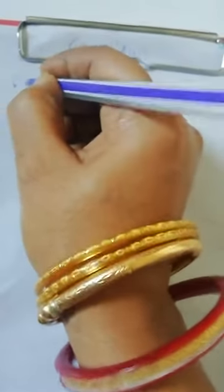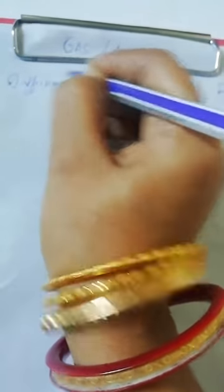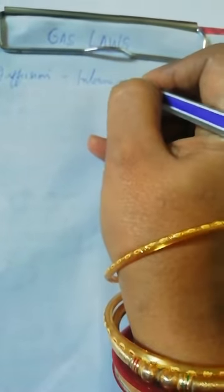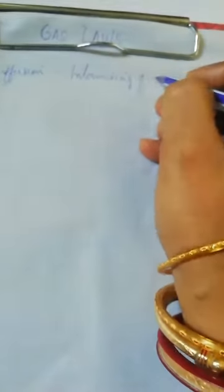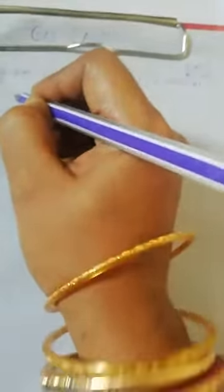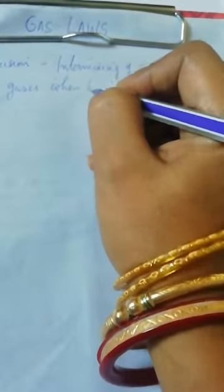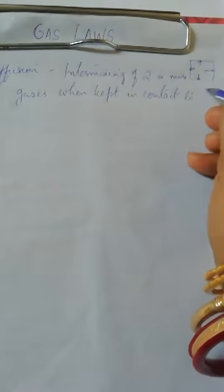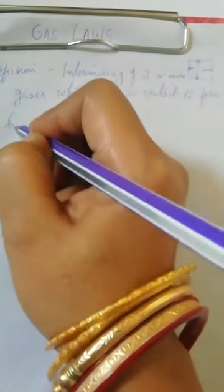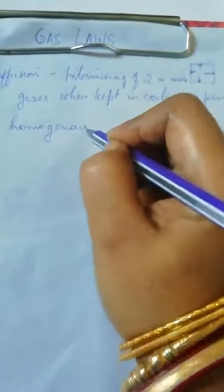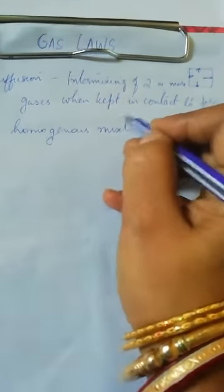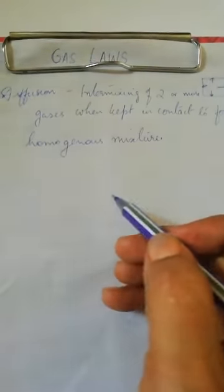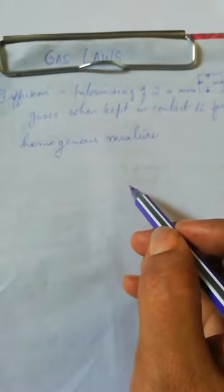There is a term called diffusion. Diffusion is the intermixing of two or more gases when kept in contact to form a homogeneous mixture. You have studied in your previous classes that the intermolecular space in gases is the largest and the intermolecular force of attraction between the gas molecules is the least.